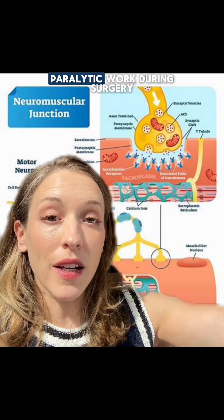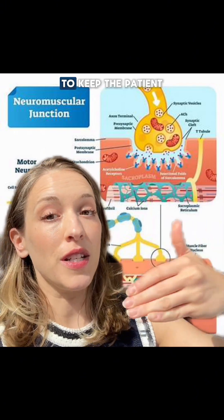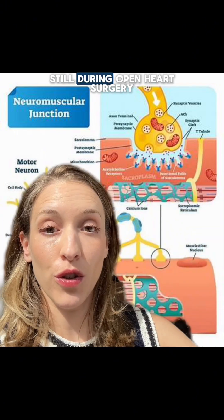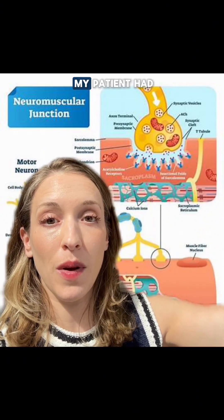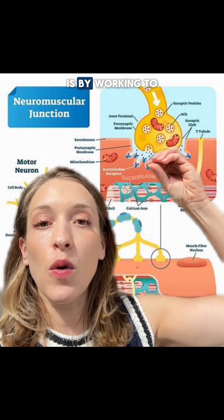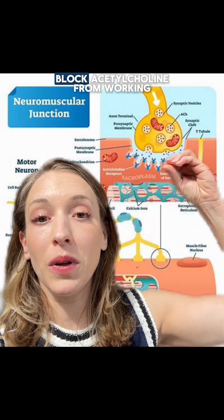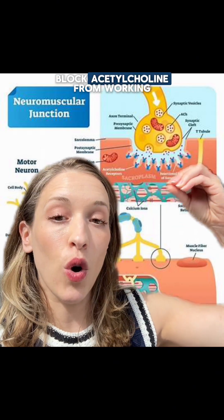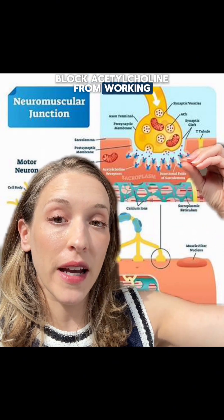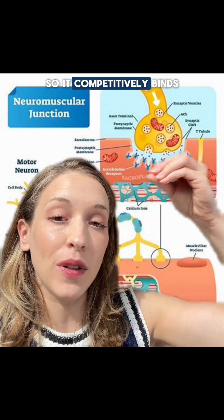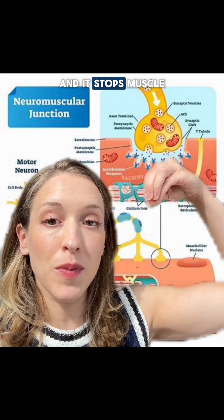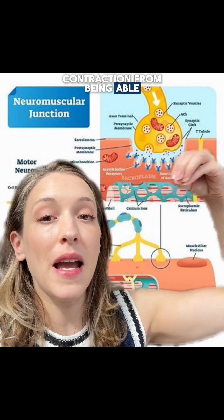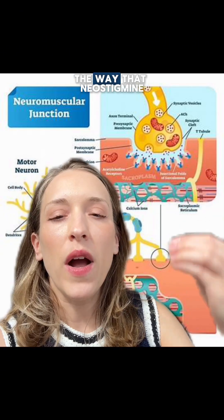The way paralytics work during surgery to keep the patient still — for example, during open heart surgery like what my patient had — is by blocking acetylcholine from working. They competitively bind for these sites and stop muscle contraction from being able to occur.